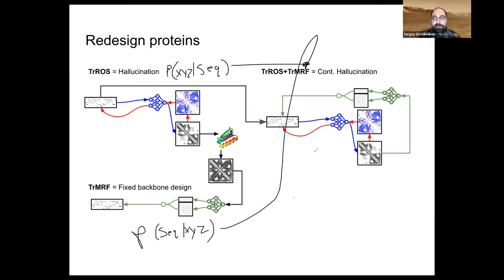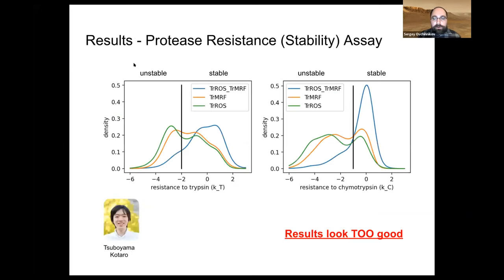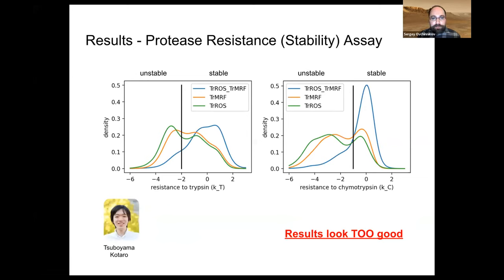Here are the results. Two different proteases were measured — trypsin and chymotrypsin — and the x-axis is resistance to these proteases. The black line separates stable from less stable. What we saw, and the results appeared almost too good, was that with the joint model things were much more stable: the blue line is almost entirely across the stable side, while the previous method had almost a 50-50 split between stable and unstable.